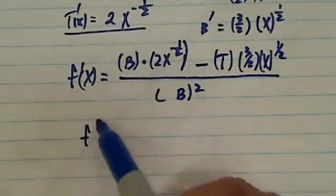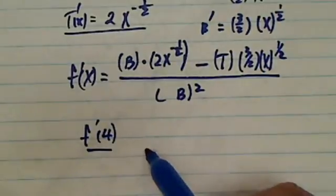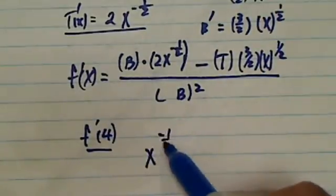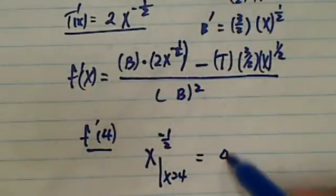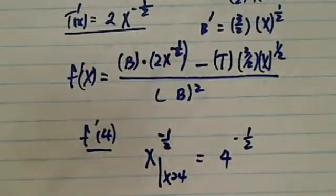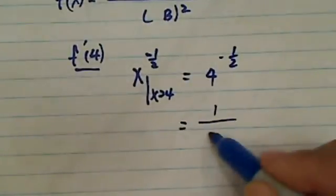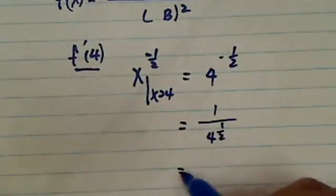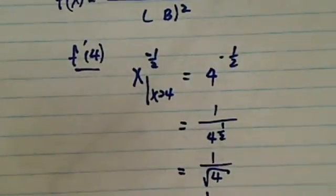Okay, one more thing about what you're trying to do here. I think you were trying to find f prime of 4, so you want to make sure that x to the minus half when x equals 4 is equal to 4 to the minus half. This minus half is tedious to deal with, so it's actually 1 over 4 to the half, which is 1 over the square root of 4. This is 1 over 2.